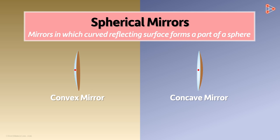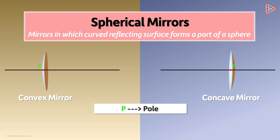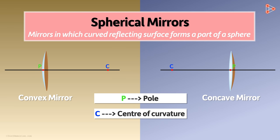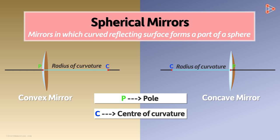The centre of the reflecting surface is called the pole. The centre of a sphere of which they form a part is called the centre of curvature, and the radius of that sphere is called the radius of curvature. CP here is the radius of curvature. Note that for a concave mirror, the centre of curvature lies at the front of the reflecting surface, whereas for a convex mirror, it lies at the back.